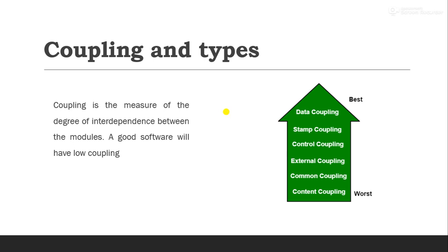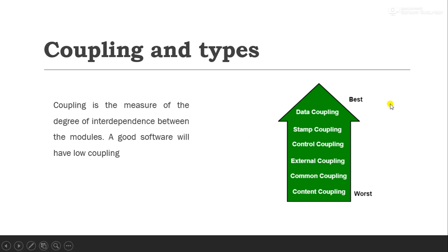If any two modules have interdependence with each other, then data coupling is the best and content coupling is the worst. We always need to make the coupling or interdependence between two modules as low as possible. We are going to learn all six types of coupling in detail in our upcoming videos.